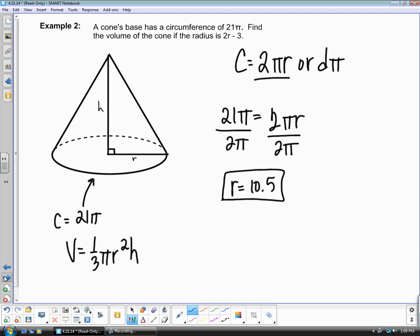Now, we know the radius and we know the height. Radius and... Actually, this is a mistake on my part. This is the height of 2r minus 3. So we are going to replace this h with 2r minus 3. And we can replace this r with 10 and a half.